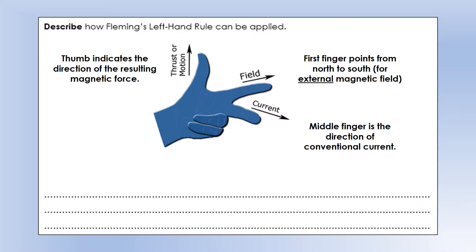Your first finger points from north to south of an external magnetic field. Your middle finger points in the direction of conventional current, or the direction that positive charges are moving. Your thumb indicates the direction that the magnetic force would act on the moving charge.